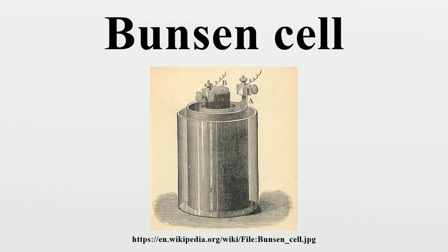Bunsen used this cell to extract metals. Henri Moissan used a stack of 90 cells for the electrolysis of hydrogen fluoride to obtain fluorine for the first time.